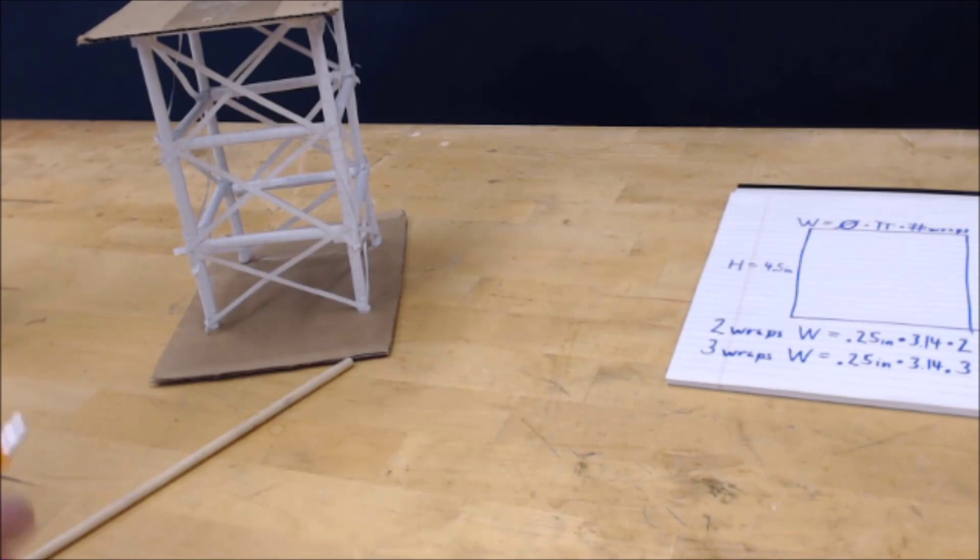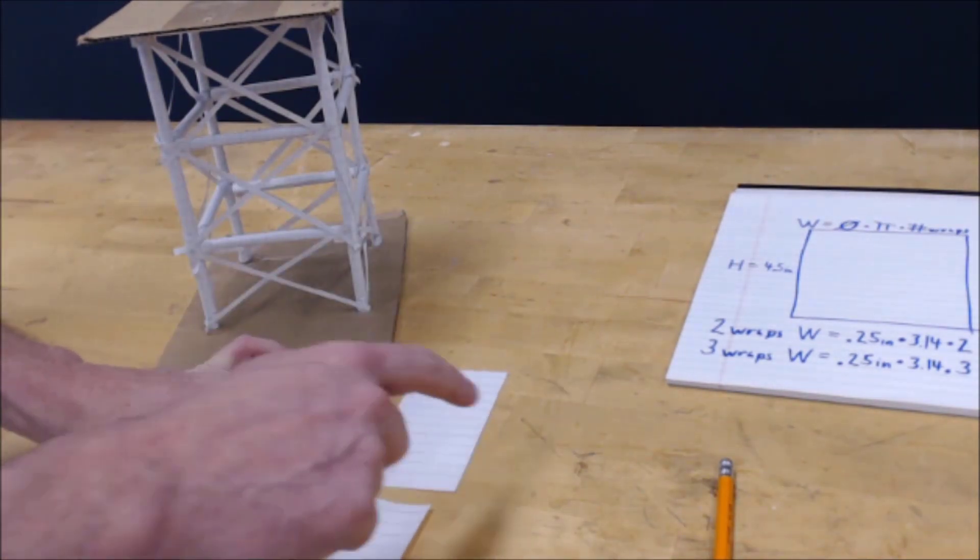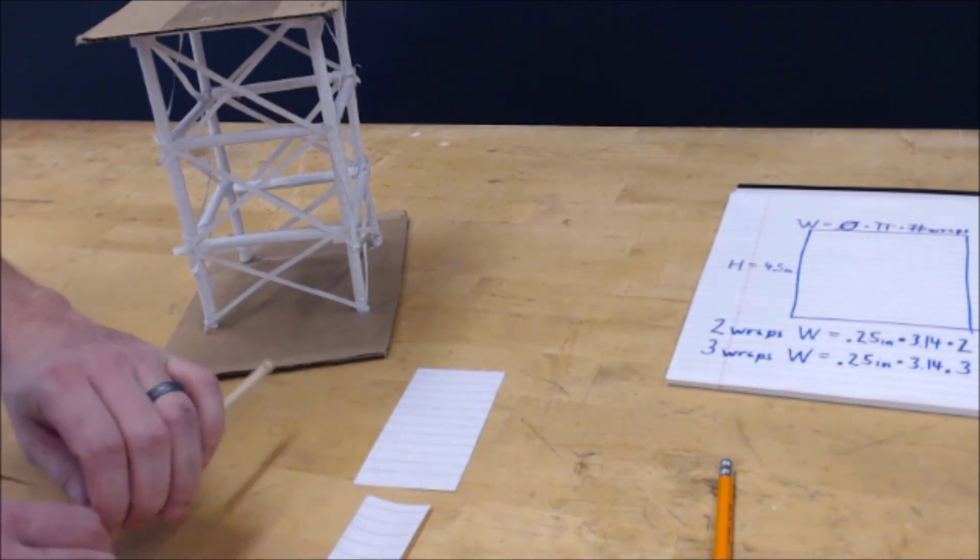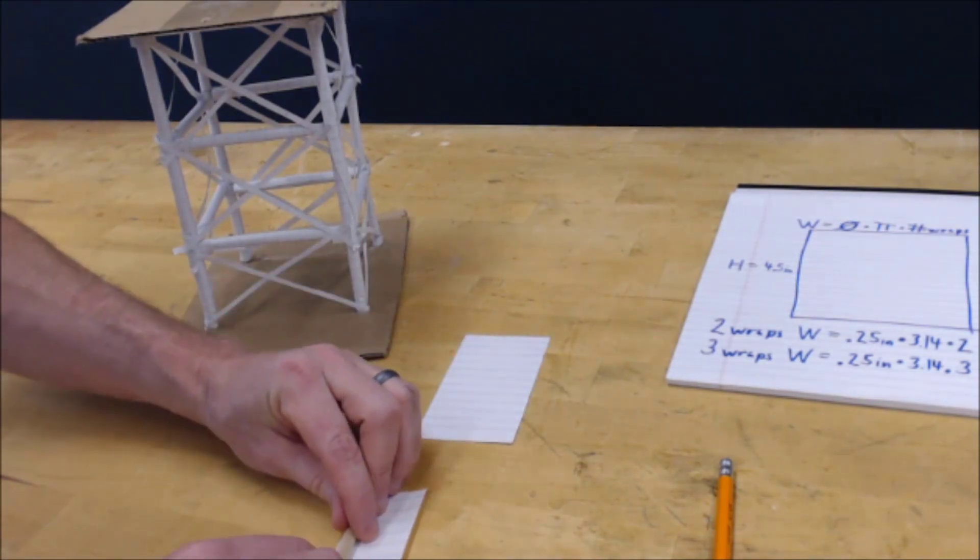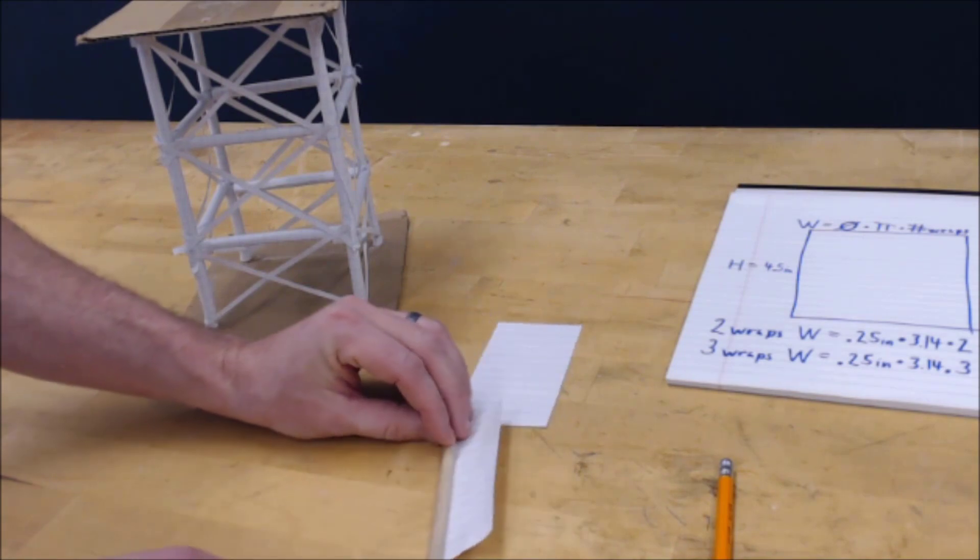I have material right here to be able to do that with. Notice I have the lines going horizontally. What that's going to do is allow me to know whether or not I'm rolling my material effectively.